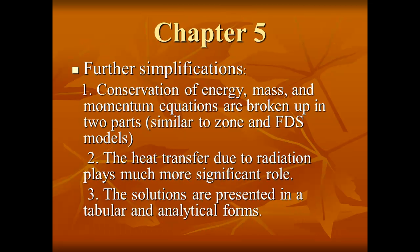Further simplifications are contained in Chapter 5. First, the conservation of energy, mass, and momentum equations are broken up into two parts, similar to zone and FDS models: conservation of energy and mass on the one hand, and the momentum equation — Navier-Stokes equations — on the other. Second, an additional simplification has been made because heat transfer due to radiation plays a much more significant role than heat transfer due to conduction and convection. Since all differential equations have dimensionless variables, the solutions are presented in tabular and analytical forms.